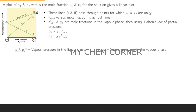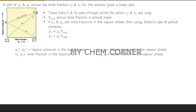Throughout this topic we've used several variables. p1° and p2° refer to vapor pressure in the liquid phase. p1 and p2 refer to vapor pressure in the vapor phase. x1 and x2 are mole fractions of the liquid phase, while y1 and y2 are mole fractions of the vapor phase. These terminologies indicate which phase is being referenced.